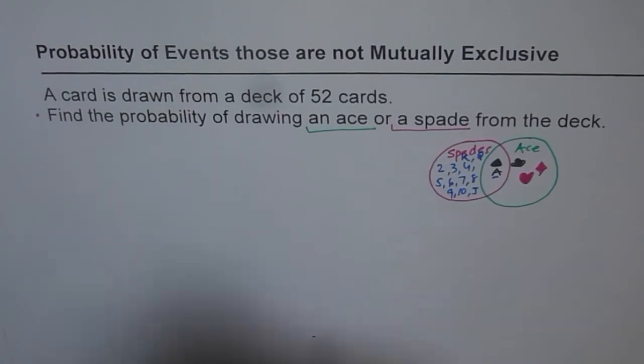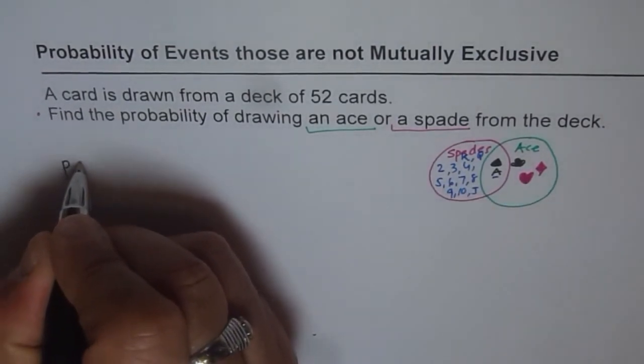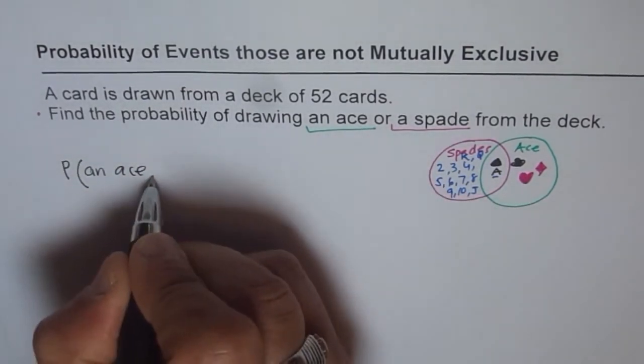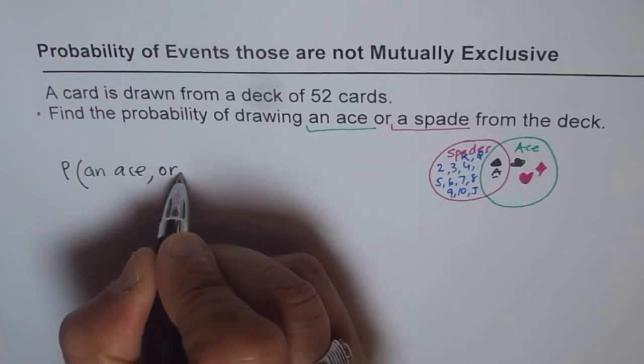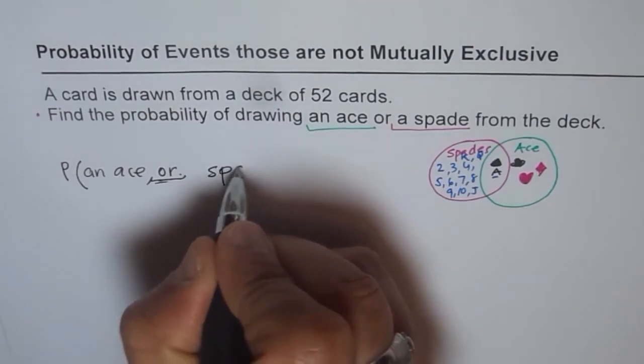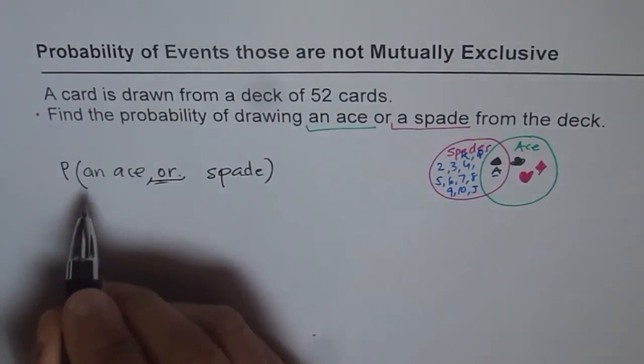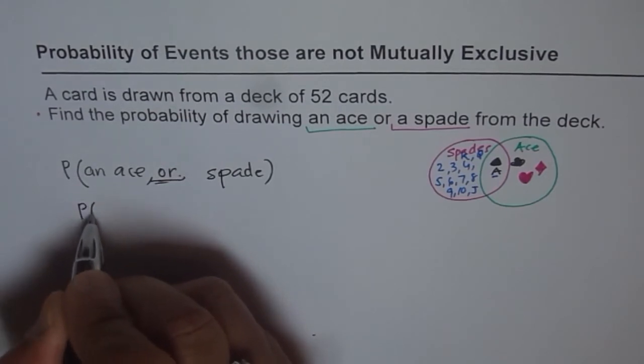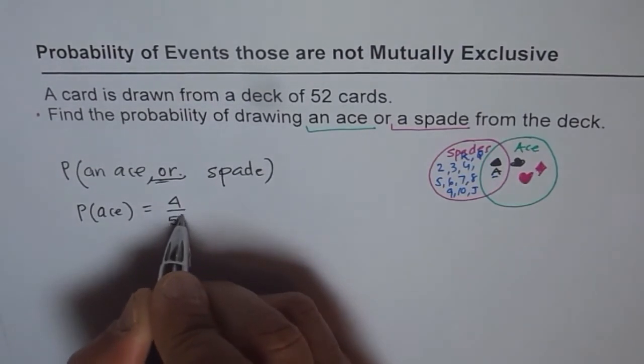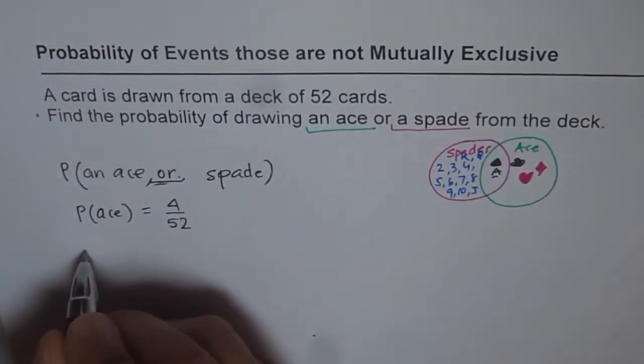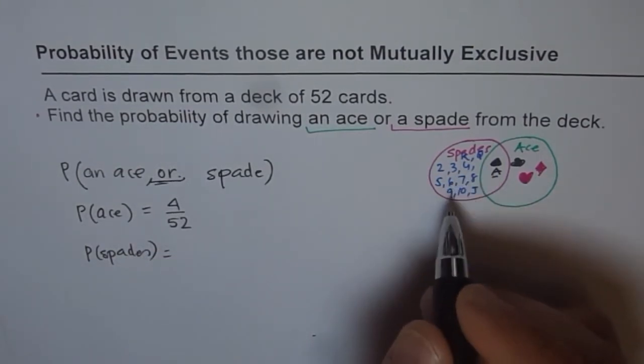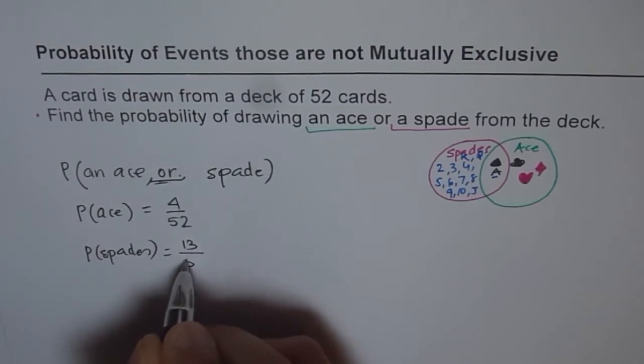Now let's make it absolutely clear. So what are we trying to find here is probability of drawing an ace or spade. So that is what we are trying to find. What is the probability of getting ace? Probability of getting ace is equal to 4 over 52. What is the probability of getting spades? Probability of getting spades is 13 over 52.